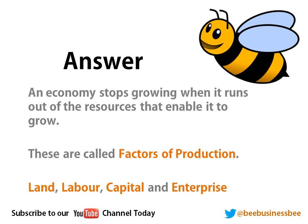An economy stops growing when it runs out of resources needed to keep growing. These are what we call factors of production — four different things that we can run out of. First, we could run out of the physical availability of land. A country or economy could run out of land that can actually be used to build on and develop — remember we have brownfield and greenbelt land.